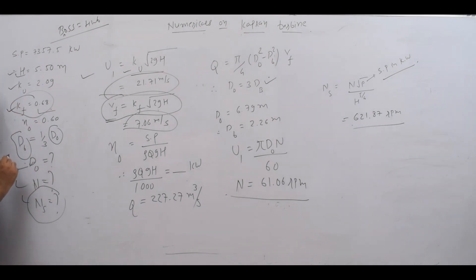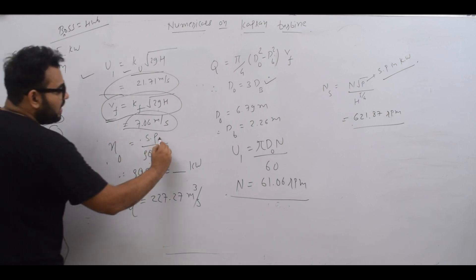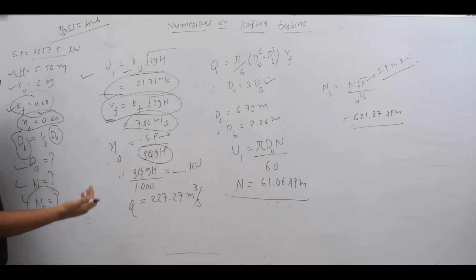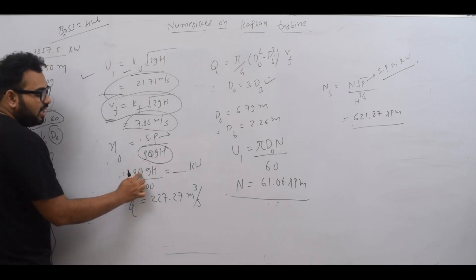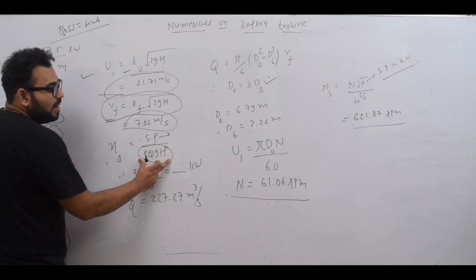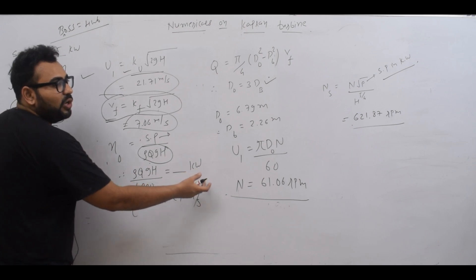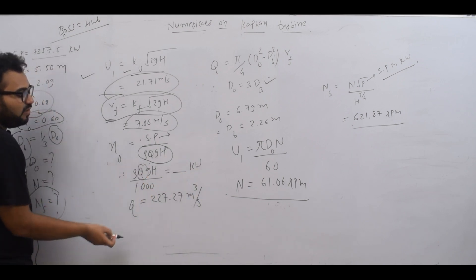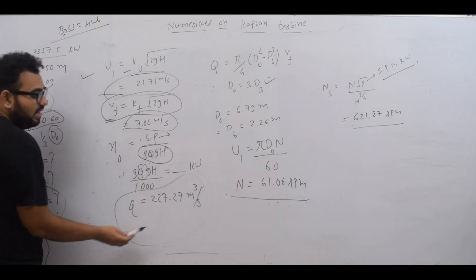Now for overall efficiency, it's shaft power upon water power. We express it in kilowatts. Water power in kilowatts is ρQgH divided by 1000. So we have efficiency equals shaft power divided by ρQgH upon 1000. From this equation, putting the values of ρ, g, and H, we can find the discharge Q.